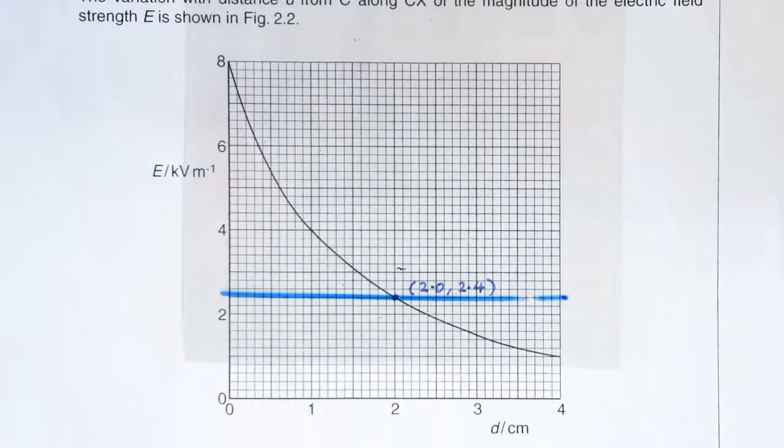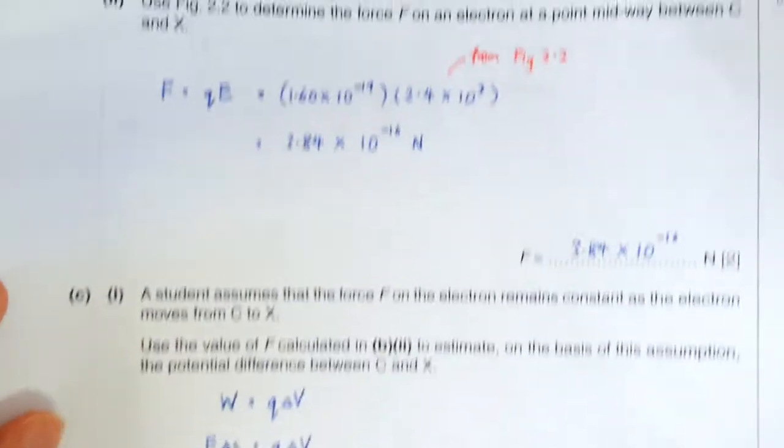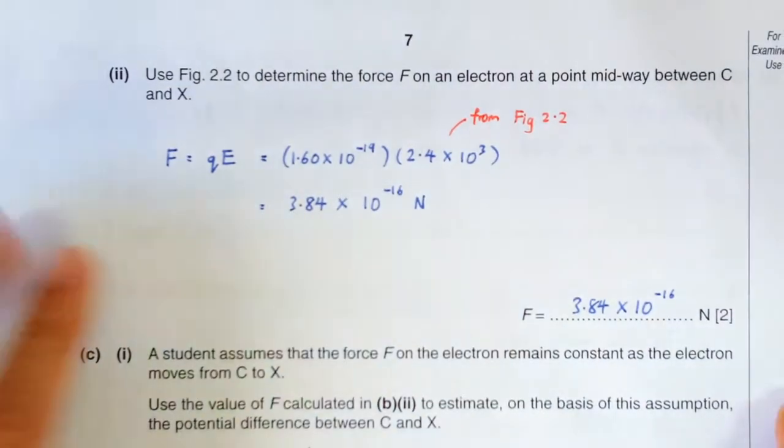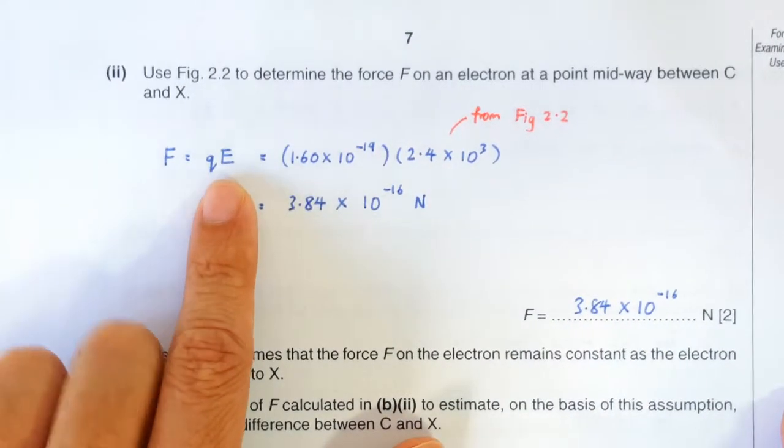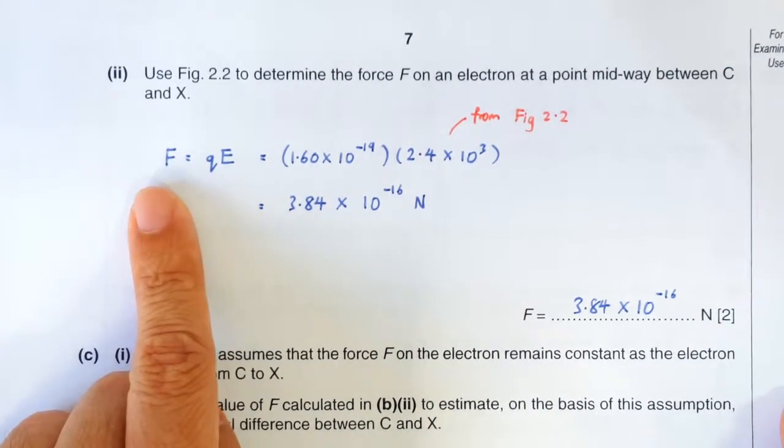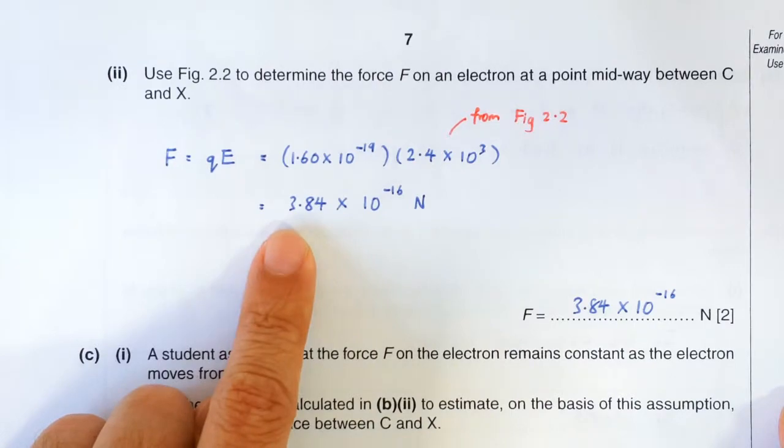So how will this affect our calculation? It started in part B2. So this value of field strength we used was too small. So this will result in an electric force that's too small.